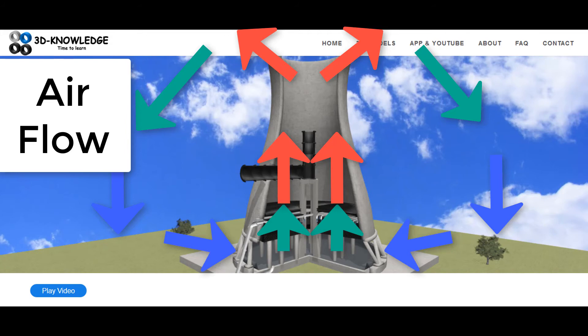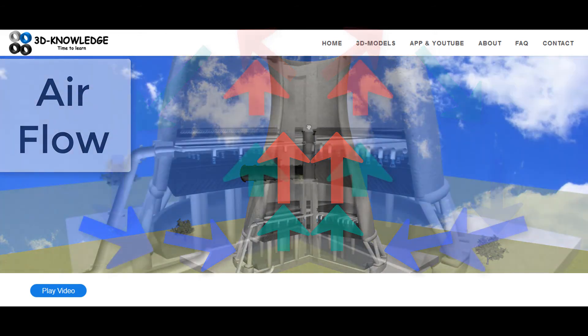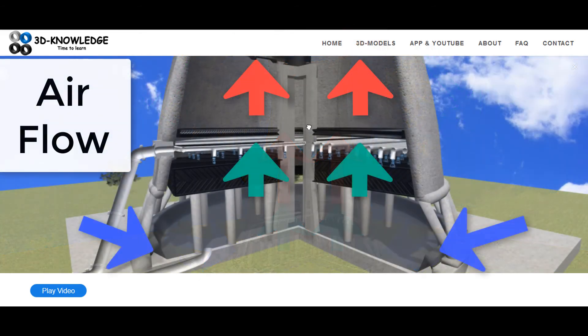And this process continues on and on. The more air that's expelled through the top of the cooling tower, the more air that's drawn in through the base of the cooling tower. This provides all our cooling requirements to the power station.